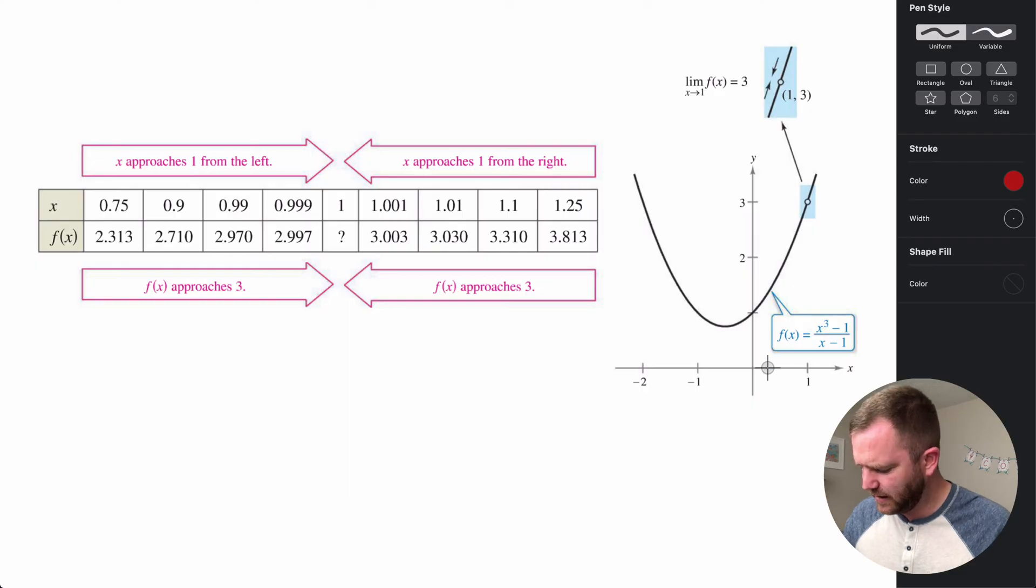We can see the same idea here. If I'm getting close to 1, at about 0.5, we can see the value of my graph is right here. If I get to 0.75, you can see my graph is getting closer and closer to 3.